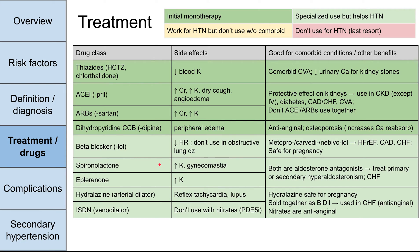Spironolactone increases potassium in the blood, causing hyperkalemia, and may also cause gynecomastia — this is due to its mechanism as an aldosterone antagonist. The other aldosterone antagonist is eplerenone, which also causes hyperkalemia. These can be used to treat primary or secondary hyperaldosteronism and are also used in congestive heart failure. Hydralazine is an arterial dilator and ISDN (isosorbide dinitrate) is a venodilator; collectively sold as Bidil, they're used in congestive heart failure and have anti-anginal effects. Hydralazine is also safe for pregnancy.